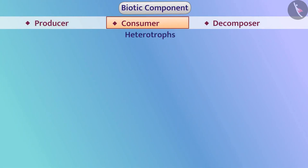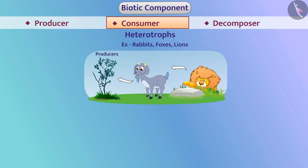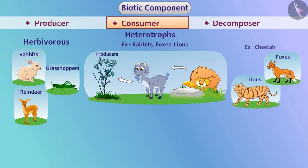Heterotrophs such as goats, rabbits, foxes, lions etc. which are directly or indirectly dependent on the producers for food are called consumers. Organisms such as goats, reindeers, rabbits, and grasshoppers which directly obtain food from autotrophic organisms are called herbivorous organisms. Organisms such as lions, foxes, and cheetah which obtain food by eating other animals are called carnivores.